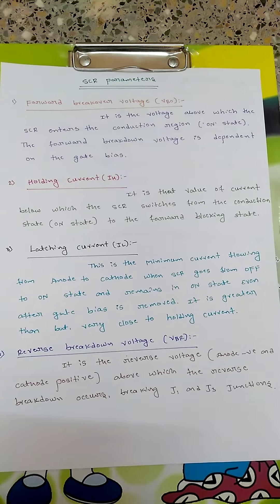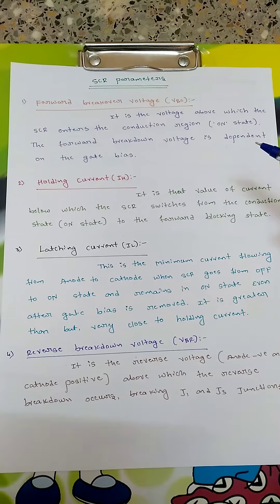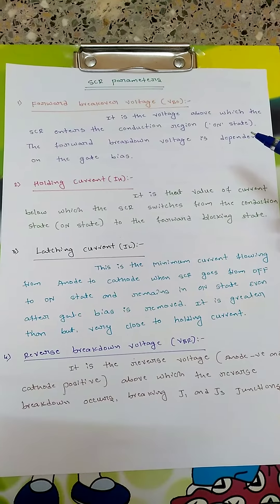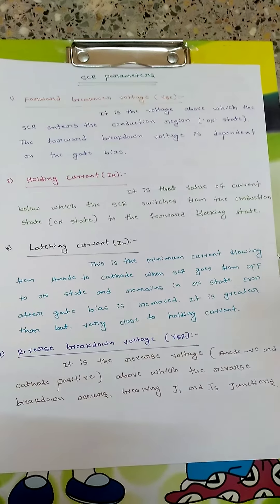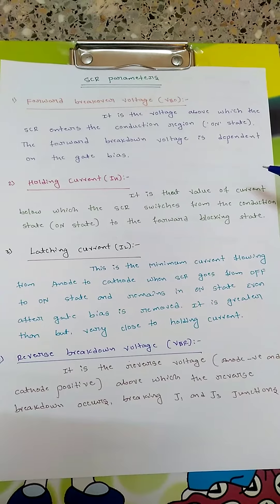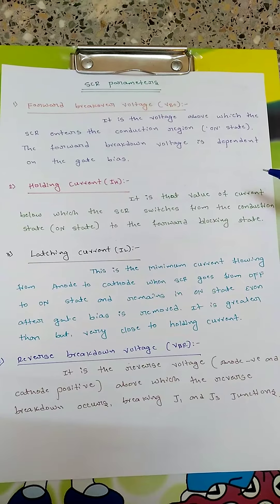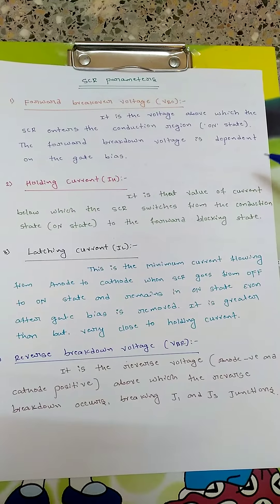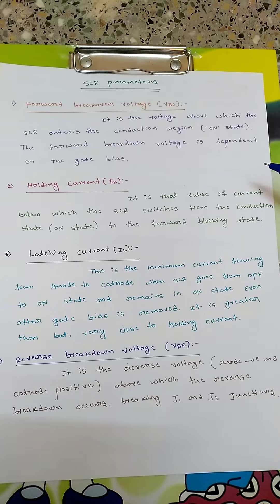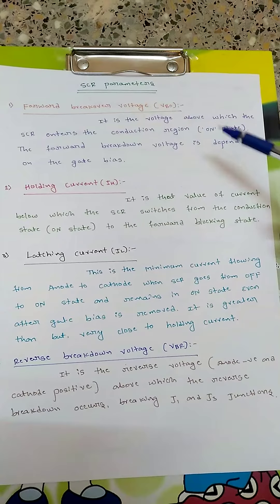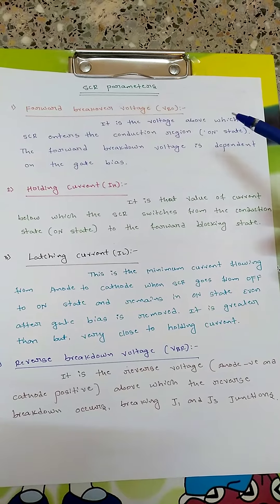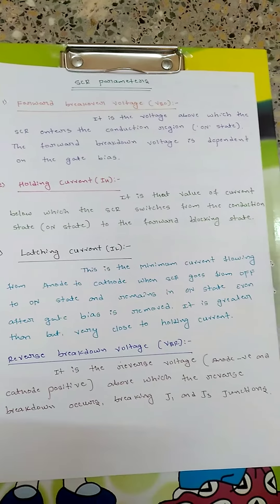For the SCR we have four main parameters. The first one is forward breakover voltage, denoted as VBO. It is the voltage above which the SCR enters the conduction region, that is the on-state. The forward breakover voltage is dependent on the gate bias — it is the voltage at which the SCR will start conducting.